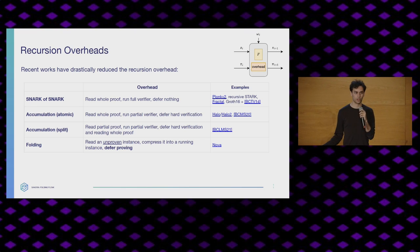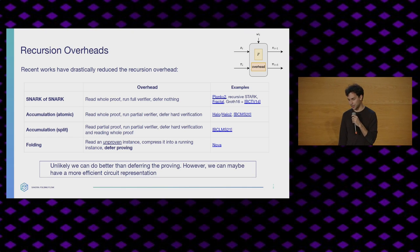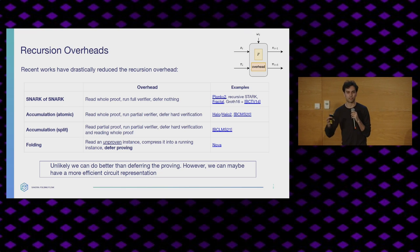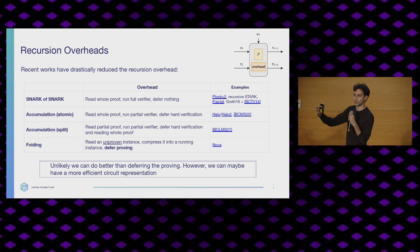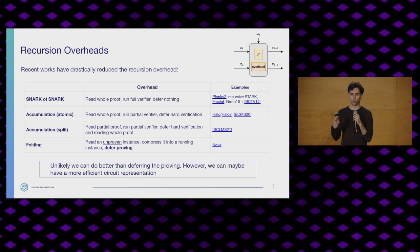Can we do better than deferring the proving? It's going to sound very hard. Personal opinion: I don't think so. But maybe we can get some efficiency from using a different constraint system — maybe we can express our circuit in a more efficient way. This is sort of what we're trying to do here with Sangria: instead of using R1CS, can we use Plonk?